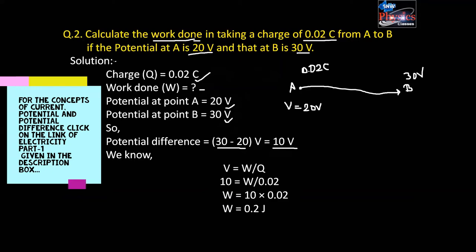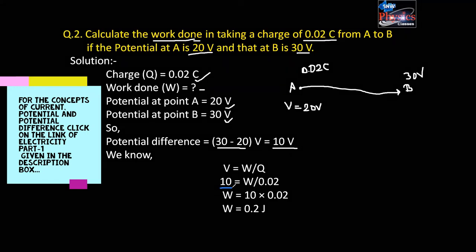We have to find out what is the work done. Work done equals V into Q, where V is 10 volt and charge is 0.02 coulomb. So work done will be 0.02 into 10, which equals 0.2 joule. The work done to take this charge from point A to point B is 0.2 joule. This is the answer.